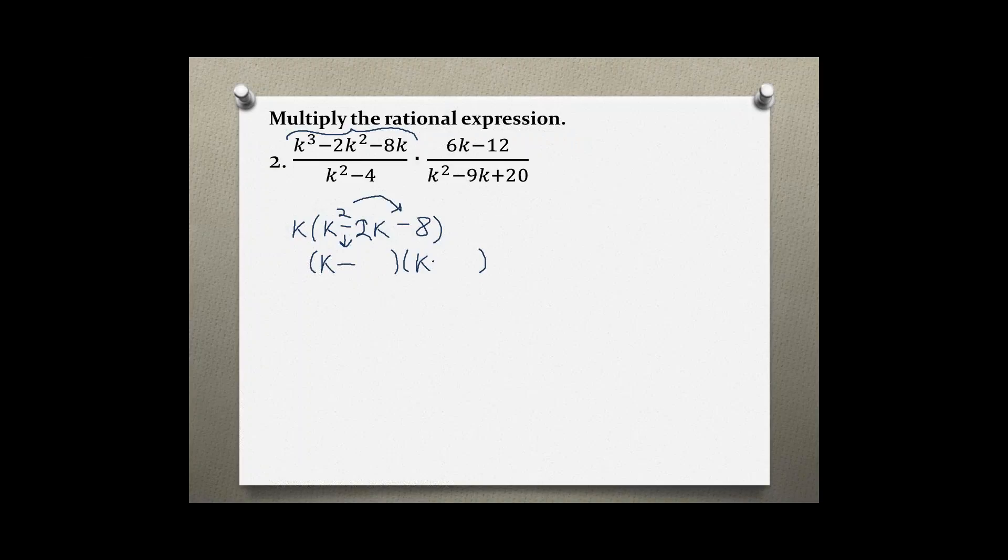I multiply the two signs together. Negative times negative is positive. I'm finding the factors of the last number, which is 8. If I have different signs in my two sets of parentheses, the factors must subtract to give me the middle number, which is 2.